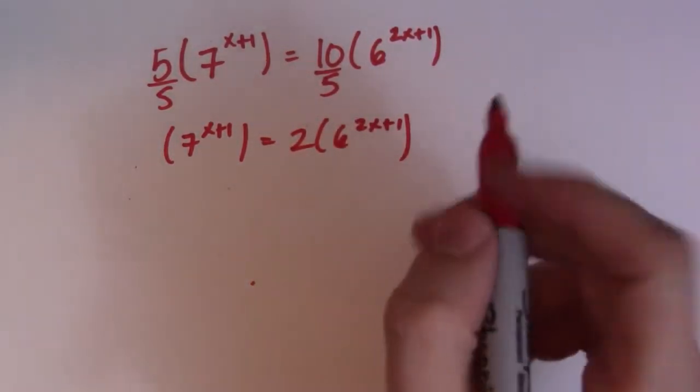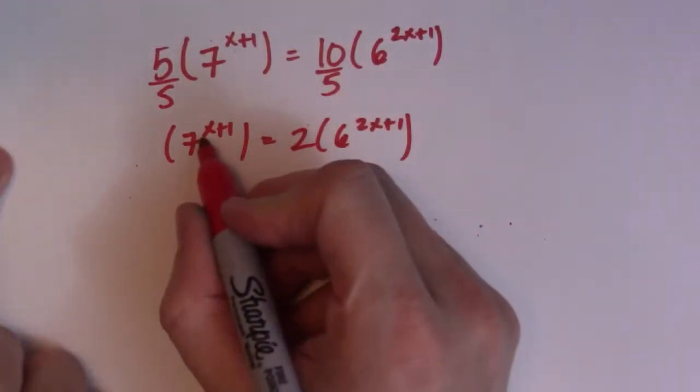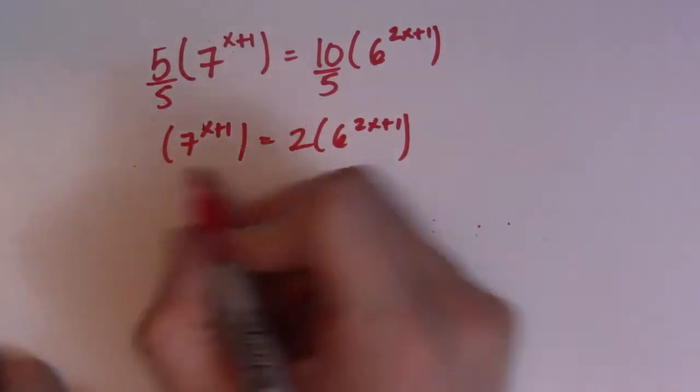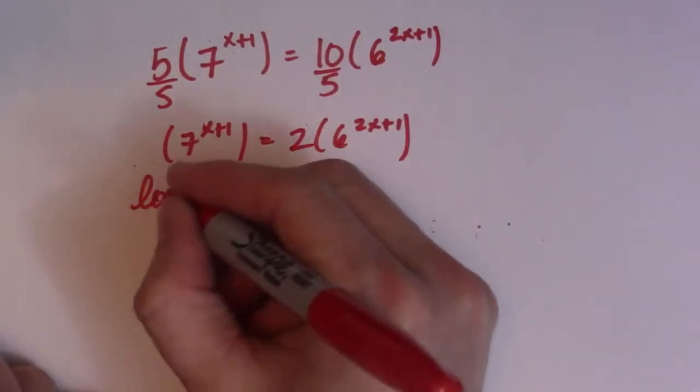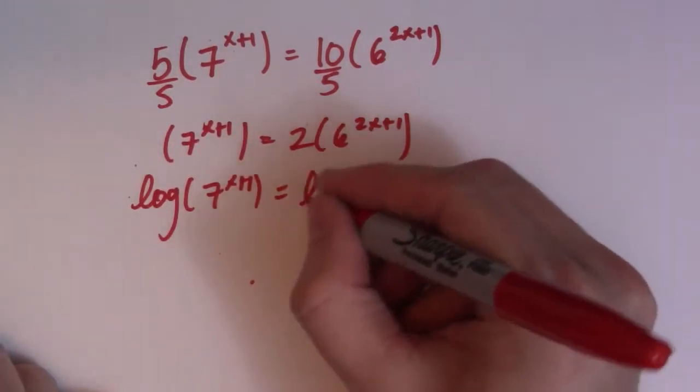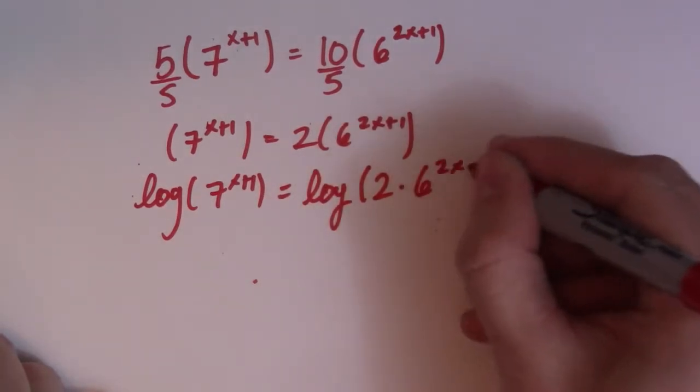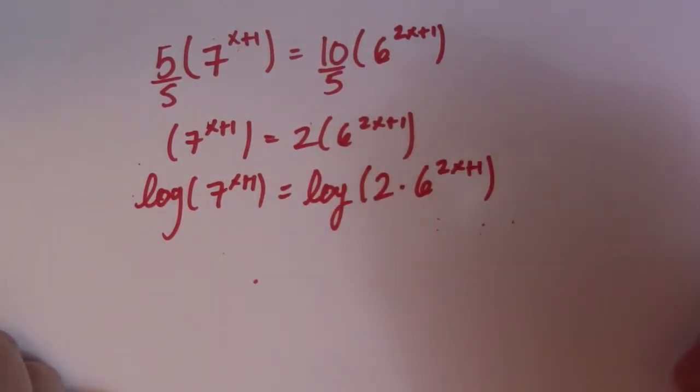So now I need to take the log of both sides. So I'm going to kind of skip a few steps here. So when I take the log of both sides, what ends up happening is my exponent comes out. So actually, you know what? I'm not going to skip any steps. So we get log 7x plus 1. Log of 2 times 6, 2x plus 1. So we get that situation.